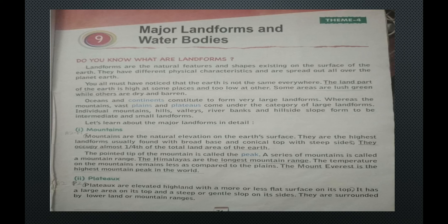Do you know what are landforms? Landforms are the natural features and shapes existing on the surface of the earth. They have different physical characteristics and are spread out all over the planet earth. You all must have noticed that the earth is not the same everywhere. The land part of the earth is high at some places and too low at other. Some areas are lush green while others are dry and barren.